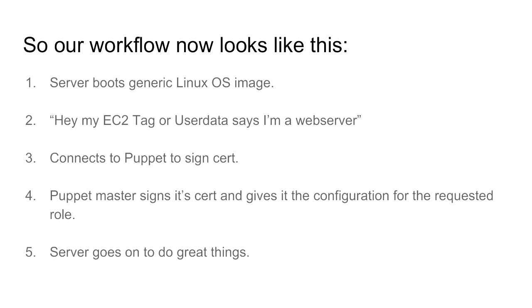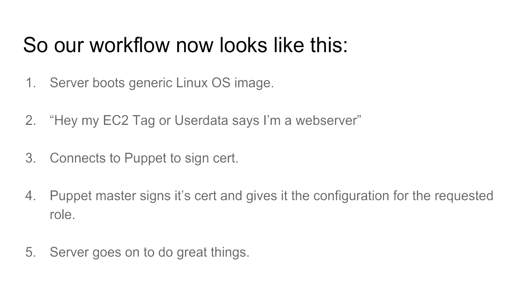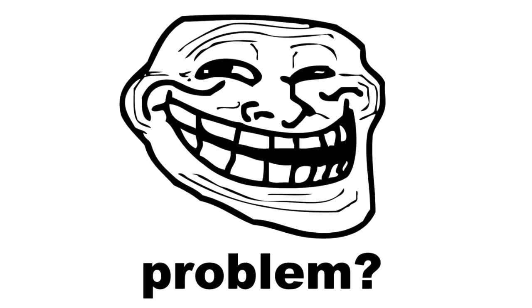The cool thing is you can put the role outside of the OS image into things like EC2 tags or user data to provision it at startup. The process goes: a server boots a generic Linux OS image, checks its user data, sees it should be a web server and which Puppet master to talk to, the master signs its certificate, gives it the configuration, and the server goes on to serve cat pics. Except there is a slight problem — the alternative workflow is that your server gets owned by an attacker.